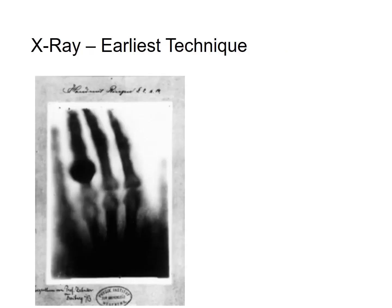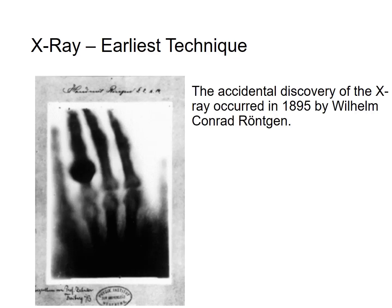The earliest imaging technique was the x-ray, and on this slide you see the first x-ray that was ever taken — of the wife's hand of the man who accidentally invented the x-ray. In 1895, the x-ray was accidentally discovered by Wilhelm Conrad Röntgen. The discovery occurred when Röntgen was exposing different kinds of paper and film to radiation. A sad chapter in this story is that Röntgen's wife, whose hand we see in the first x-ray, succumbed to cancer that was likely caused by her being exposed to radiation in the laboratory.